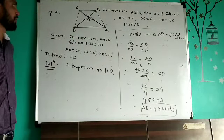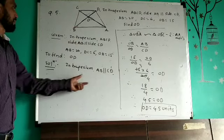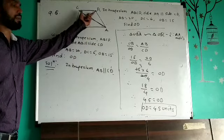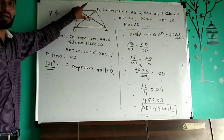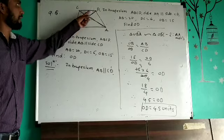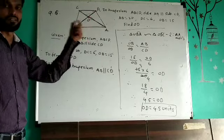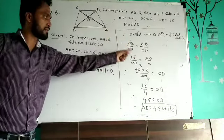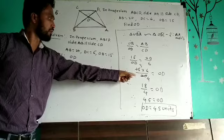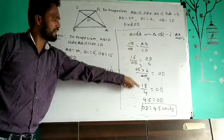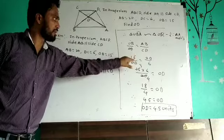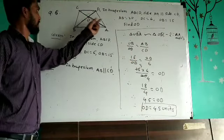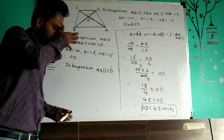OD is equal to 4.5 units. Both examples use the same concept of trapezium: opposite sides parallel, transversal gives alternate angles equal, vertically opposite angles equal, AA test shows two triangles are similar, then the same ratio gives the required calculation to find the unknown length.